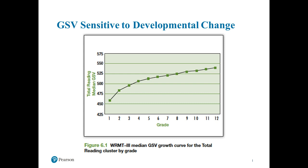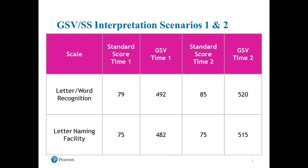If a child increases at all in growth scale value from time one to time two, that means their skill went up. The way you make that meaningful is to interpret growth scale values in light of standard score changes. I have a couple of scenarios here to help us understand this more clearly, focusing on progress monitoring and determining whether or not a child is making progress.